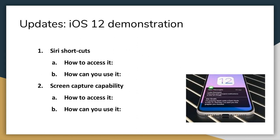Another cool example: if you use an app like Tile, rather than opening the app to find your keys, you can just ask Siri 'where are my keys' and it'll locate them. Also new in iOS 12, you no longer have to have your phone plugged in to access Siri. Those same shortcuts are available throughout your phone for actions like sending text messages or starting a gym playlist. That's a really cool update for iOS 12 on the Siri shortcuts.